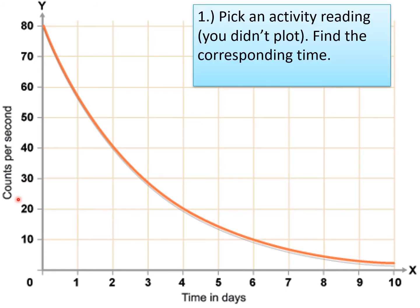First of all, you pick an activity reading that you didn't plot and find the corresponding time. For example, let's pick 60 and the time is roughly about there, about 0.9 of a day. I would actually draw this in on your graph so you can get the most accurate time possible.